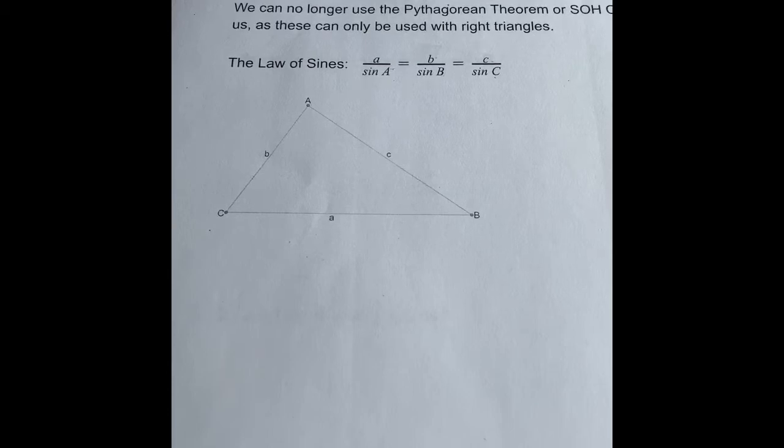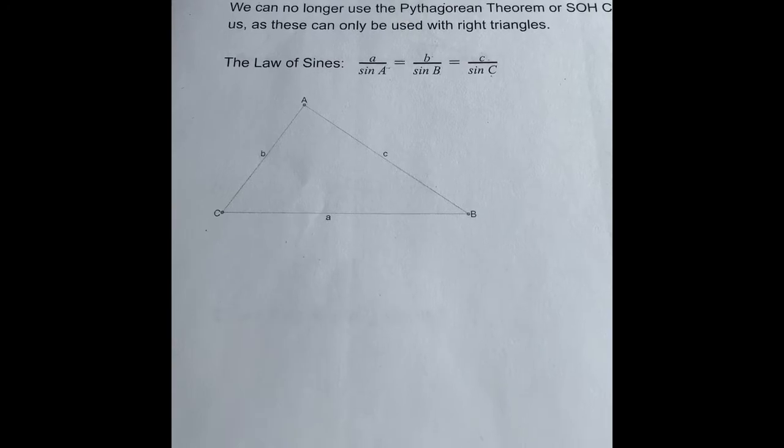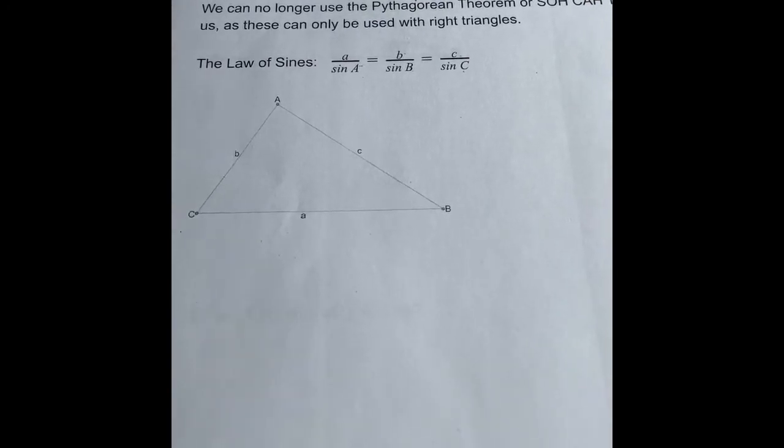So the triangles that we are going to see in this new unit will no longer have right angles in them. They are not right triangles. Because of this, we can no longer use the Pythagorean Theorem or SOHCAHTOA.